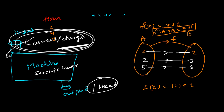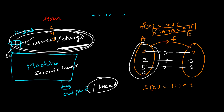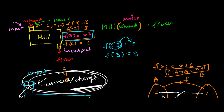For every element in the domain, there must be an output in the codomain. If I put 6 into the function, I get 7. You cannot leave any element without an image — if you put 6 and get nothing, that's not a function. Every element of the domain must have its image in the codomain. Otherwise it may be a relation, but not a function.